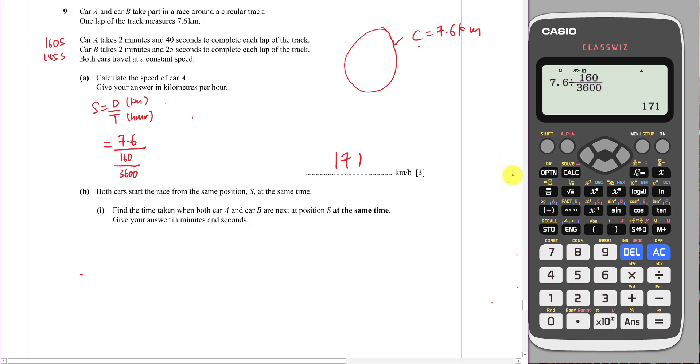I think the difficult part is part B. Part B says both cars start the race from the same position S. So I just assume for this track here we should have the starting position S. Car A is going to travel like this, and B is going to travel like this as well. Both of them start from S at the same time. Then find the time taken when both car A and car B are next at position S at the same time.